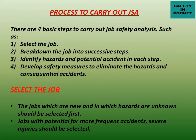The procedure to carry out JSA involves four basic steps: first, select the job; second, break down the job into successive steps; third, identify hazards and potential accidents in each step; fourth, develop safety measures to eliminate the hazards and consequential accidents.